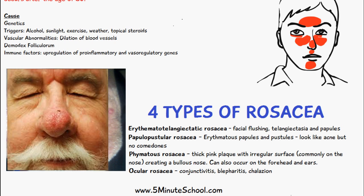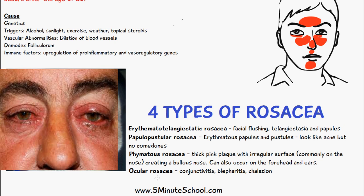The fourth type is ocular rosacea, which involves conjunctivitis — inflammation of the conjunctiva — blepharitis, which is inflammation of the eyelid, and a chalazion, which is a small bump on the eyelid caused by a blocked gland.